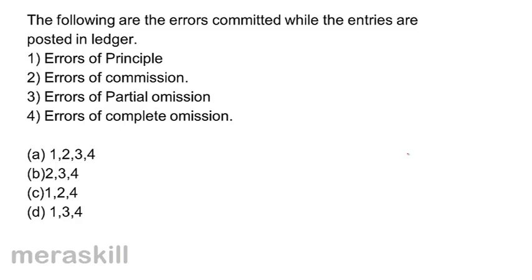The following are the errors committed while entries are posted in the ledger: 1. Error of principle, 2. Error of commission, 3. Errors of partial omission, and 4. Errors of complete omission.